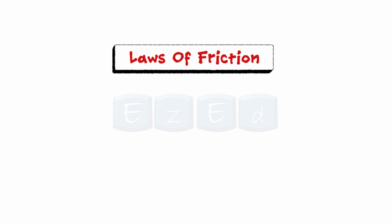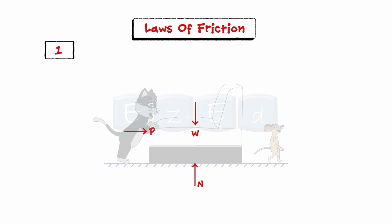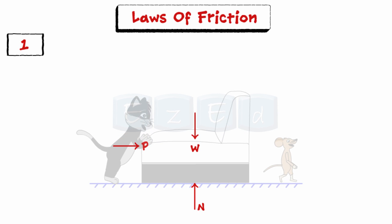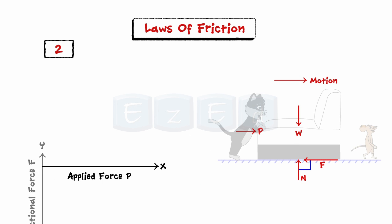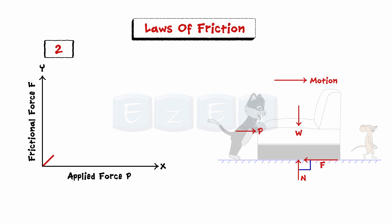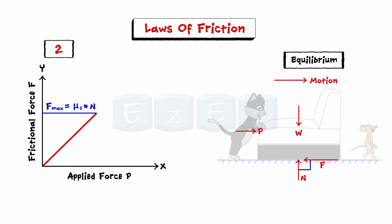The laws of friction are as follows. When two bodies are in contact, the frictional force is always tangential to the contact surface and acts opposite to the direction of impending motion. Also, the frictional force is proportional and perpendicular to the normal force N. The value of frictional force increases as the applied force increases till it reaches the limiting value F_max. During this period, the bodies are in equilibrium and the force of friction is just sufficient to prevent motion.